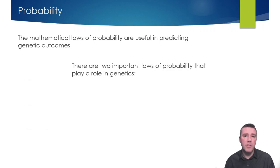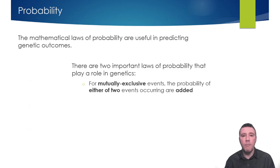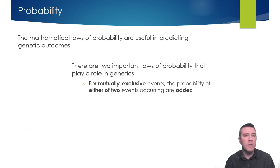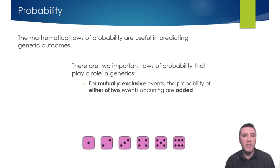The first states that for any set of mutually exclusive events, the probability of either of those two events occurring are added together. Consider a six-sided die. The probability of rolling a two is one-sixth. The probability of rolling a two or a five is one-sixth plus one-sixth, equaling one-third.